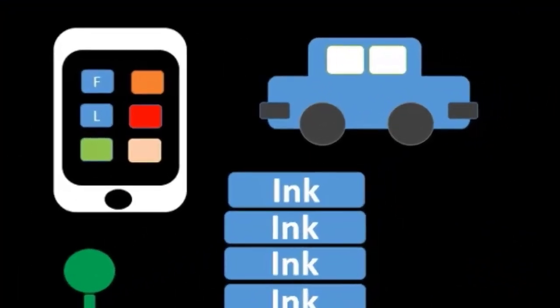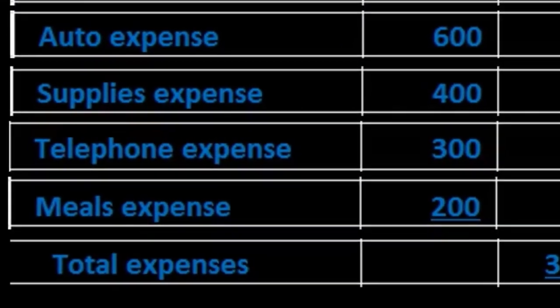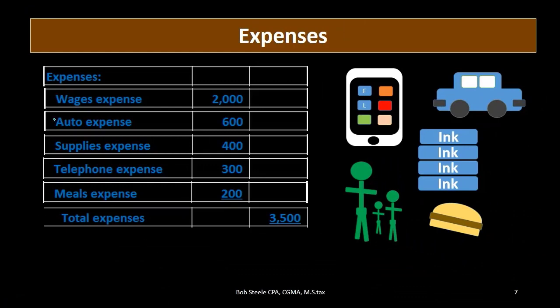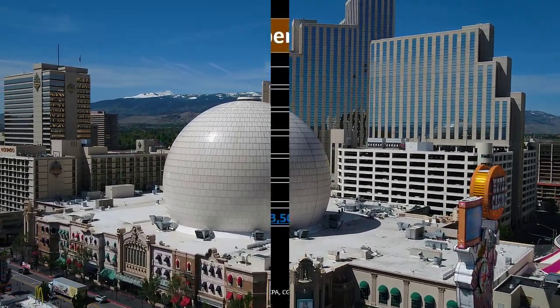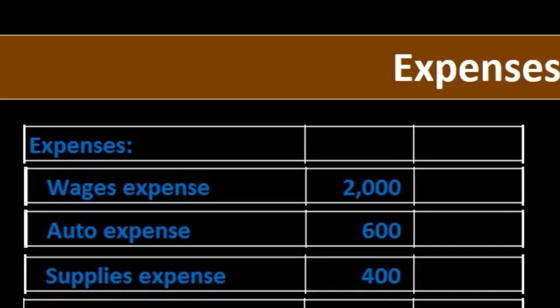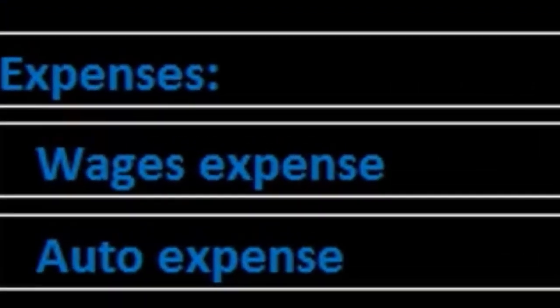The order of expenses is often a question. It doesn't have to be any particular order, but we want the most useful order for end users. Often we put the largest expenses first — wages expense is typically one of the bigger expenses — listed in descending order. Many textbooks include a miscellaneous expense at the bottom, even if it's larger, because it's a catch-all category. If we sell inventory, we generally start with cost of goods sold as the most important and largest expense.